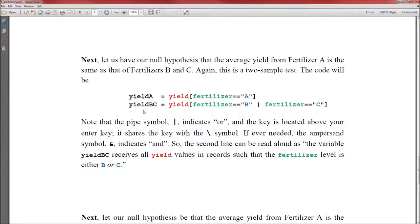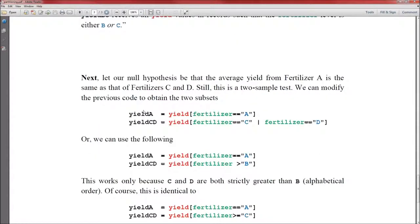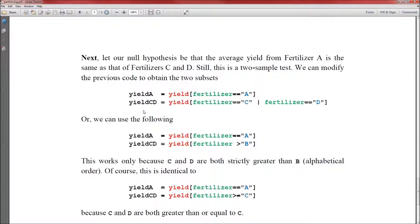Now we can actually do the second line in other ways. Just to see if we've got it, let's do yieldCD. Yield, fertilizer is C, or fertilizer is D. What this does is it looks for all those records where the fertilizer is C or where the fertilizer is D. For all those records, it takes the yield and sticks it into the variable yieldCD.